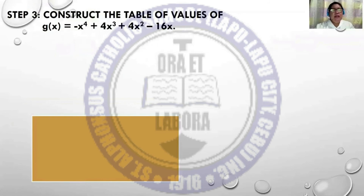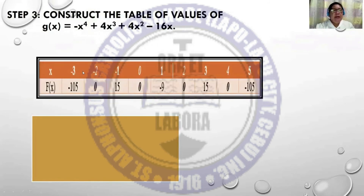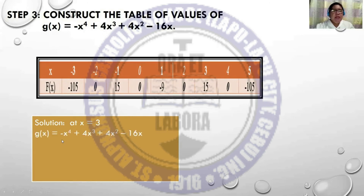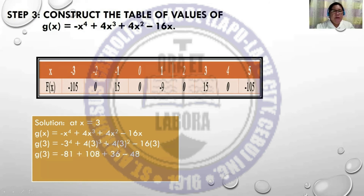We construct the table of values of the given function. The values of x start at -3 as the lower bound going to 5 as the upper bound, with corresponding f(x) or y values. For example, at x = 3: substituting into the function gives -81 + 108 + 36 - 48 = 15. That is why the table shows 15 at x = 3.